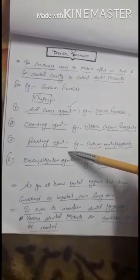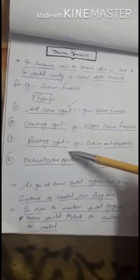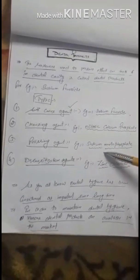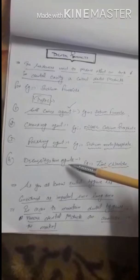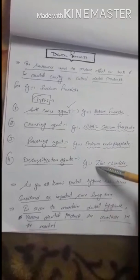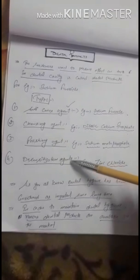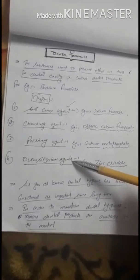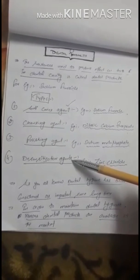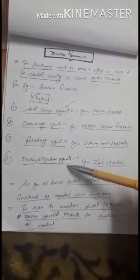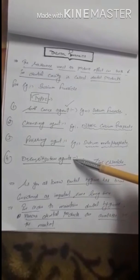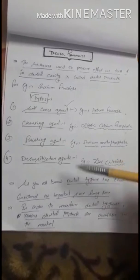The next category is polishing agent — if we have to polish our teeth, we can use a polishing agent; example: sodium metaphosphate. The last category is desensitization agent — if we have to reduce the sensitivity of the teeth, we can use a desensitization agent; example: zinc chloride.